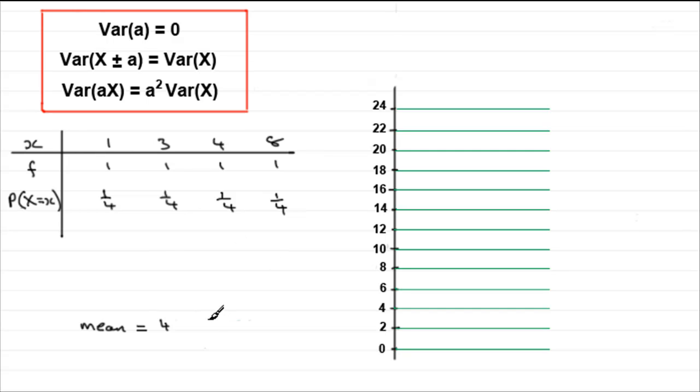You've got a 1 in 4 chance of getting those scores. And you could use the formula E(X) that we've discussed in the past. E(X), remember, you just do the observed value times the probability. And you repeat that 3 times a quarter, 4 times a quarter, 8 times a quarter and total it all up. And you should find you still get that value 4.